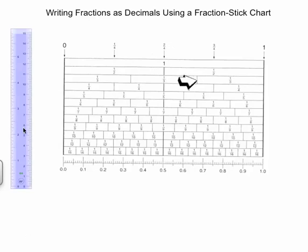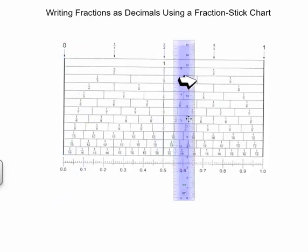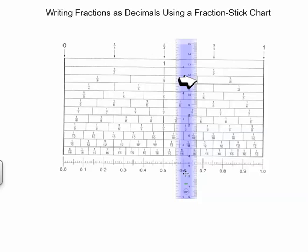Next, place one edge of the ruler or straight edge at two-thirds. That is, along the right edge of the second one-third piece and perpendicular to the decimal line bar. This is the decimal line bar.